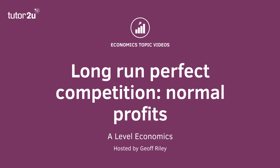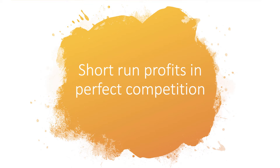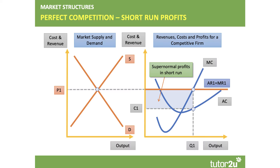Welcome to a second video looking at perfect competition. In this one we're going to focus on how we end up at an equilibrium in the long run where normal profit is made. Let's start off with a situation where the existing representative firms are making short-term supernormal profits. The price is above the average cost of production, and here would be our scenario.